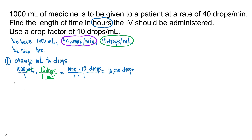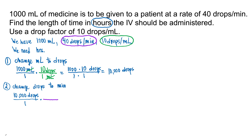Next we are going to change drops to minutes — step number 2. Write 10,000 drops over 1 and prepare to multiply by the conversion factor. 40 drops per minute will give us time because we are going to get rid of drops. Put 40 drops in the denominator and 1 minute in the numerator, because your drops will cancel out and you will be left with minutes.